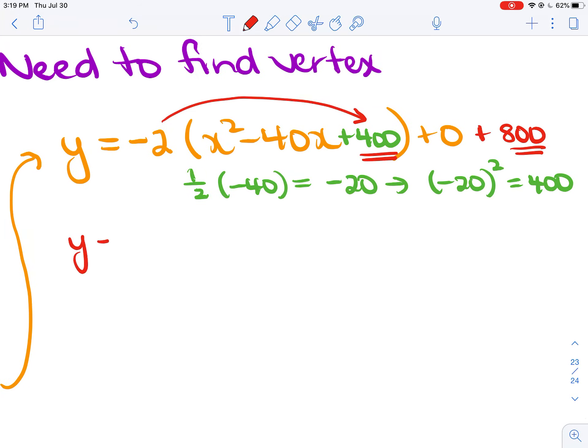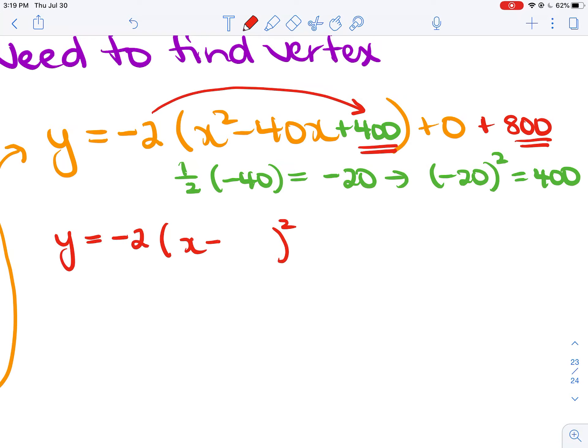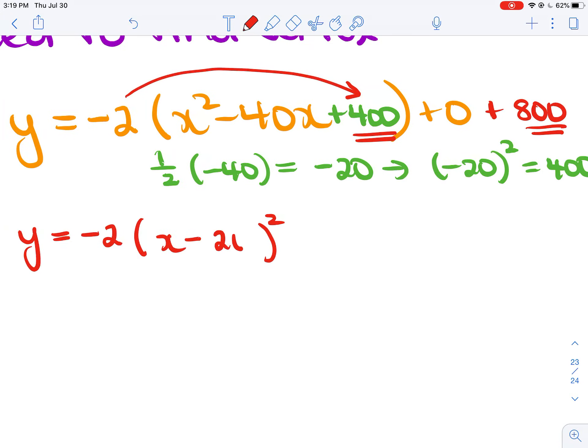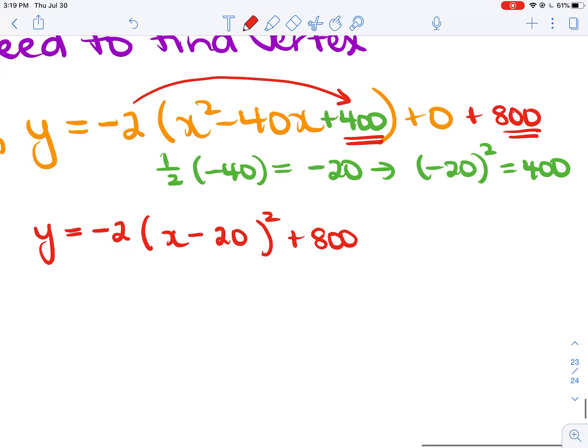Now, you can write this with the perfect square trinomial factored. The negative 2 is outside. You're going to have an x in your squared bracket. You need a minus because of the minus 40x. And now, what's the square root of that green 400? Square root of 400 is 20. And now, on the end, 0 plus 800 is 800. There is our standard or vertex form.